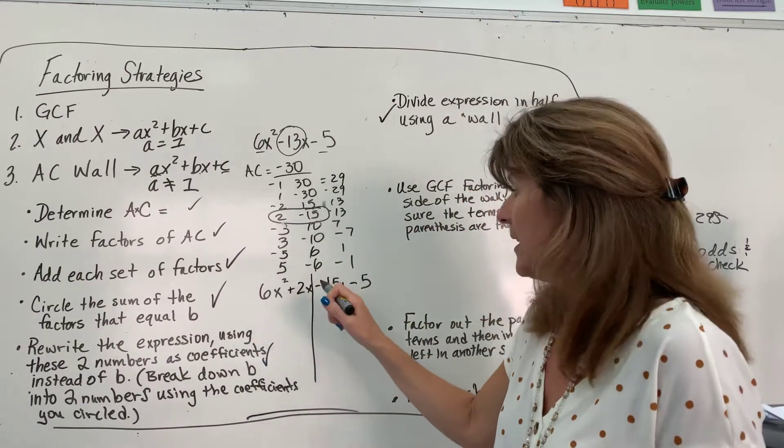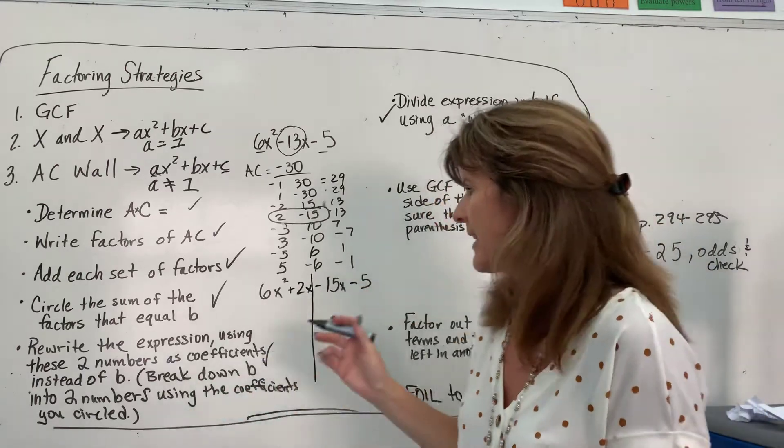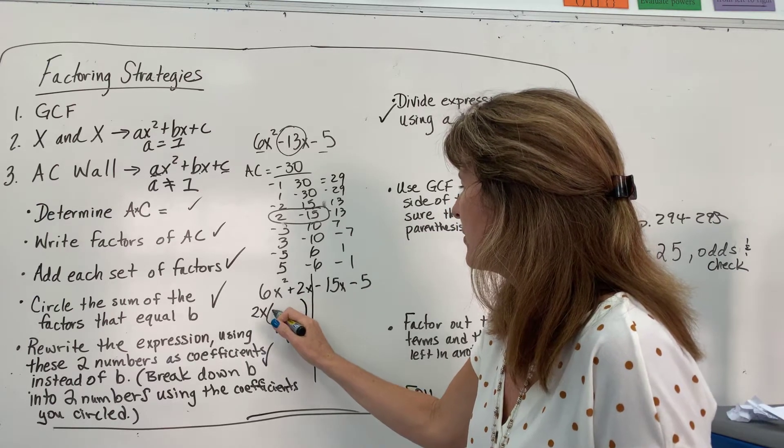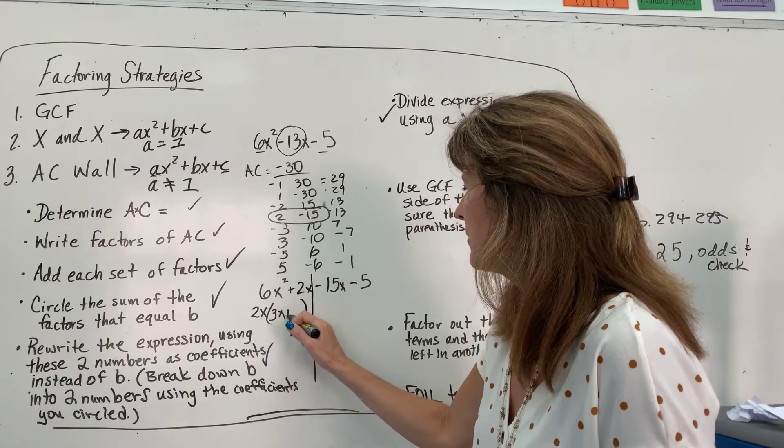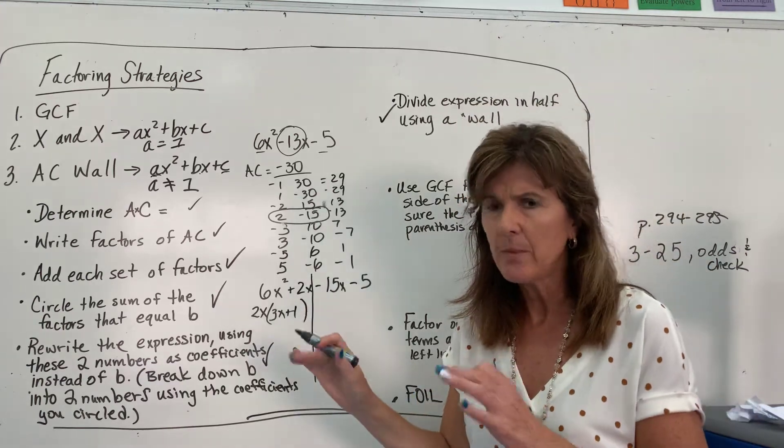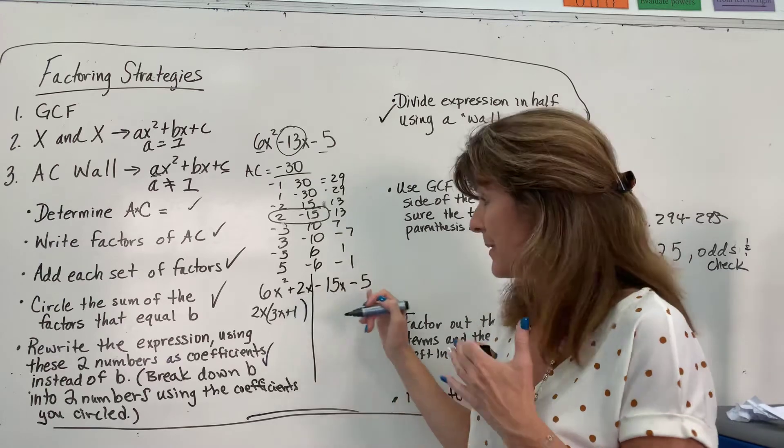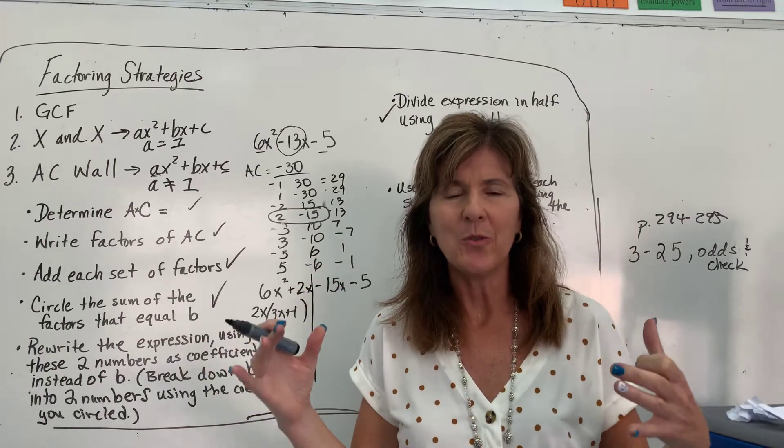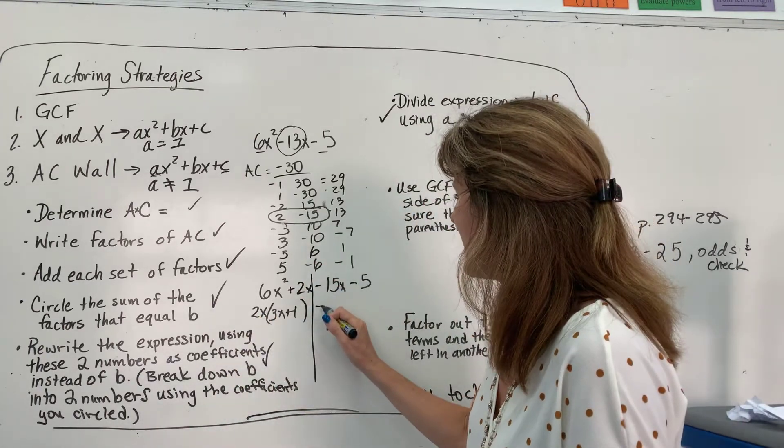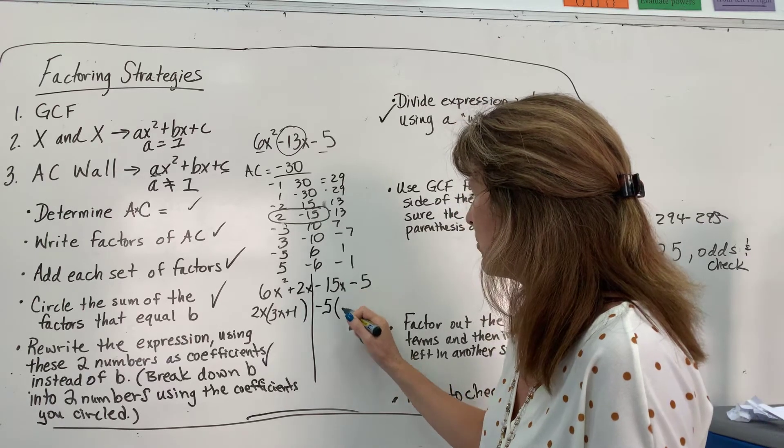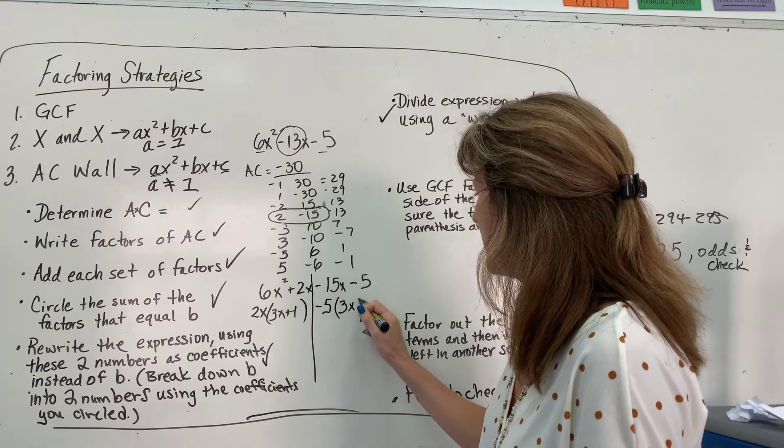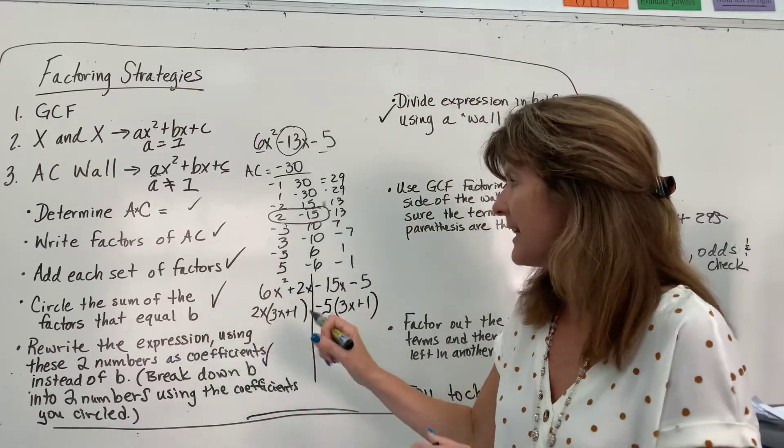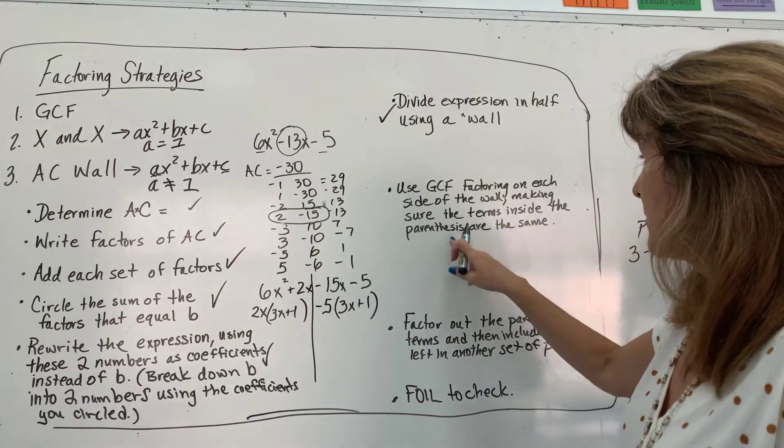Then, I'm going to use GCF factoring on each side, making sure the terms inside the parentheses are the same. Okay. Let's just worry about the first part of that. The GCF factor. Let's go back and refer to the GCF on each side. We're going to treat these as two different problems. GCF here. You can break this down. I have 3 times 2 times x times x plus 2 times x. Or, if you're at the point where you can say, oh, I know 2x is a GCF. And then, what do I have left? I have 3x here plus one.